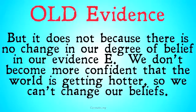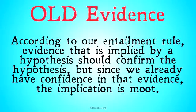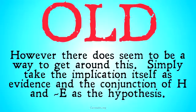It doesn't happen because there's no change in our degree of belief in evidence E. We don't become more confident that the world is getting hotter, so we can't change our beliefs. According to our entailment rule, evidence implied by a hypothesis should confirm the hypothesis — but since we already have high confidence in that evidence, this implication is moot. However, it seems that in certain cases there's a way to get around this: simply take the implication itself as the piece of evidence that is confirming H, and take the conjunction of H-and-not-E as the hypothesis.